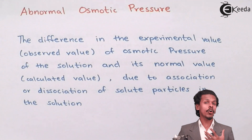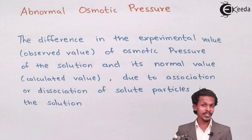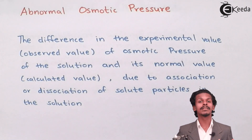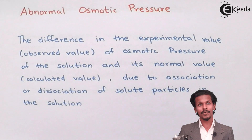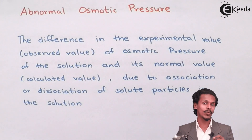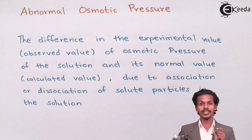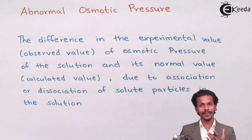So friends, osmotic pressure, since it is a colligative property, it will depend on the number of solute particles. But there are some solute particles which undergo certain processes that could increase the number of solutes when dissolved in the solvent, or decrease the number of solutes when dissolved in the solvent. This behavior of the solute particles creates an abnormality in the calculation of osmotic pressure, and the nature of the solute prevents us from knowing the exact osmotic pressure of a solution.